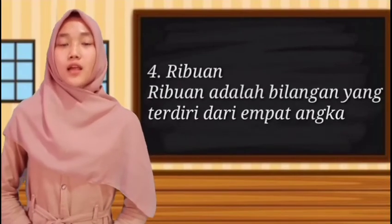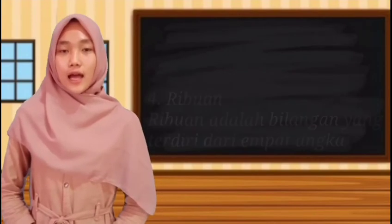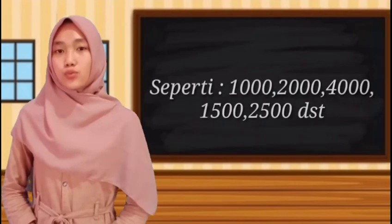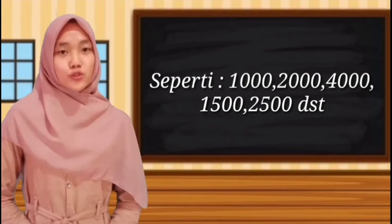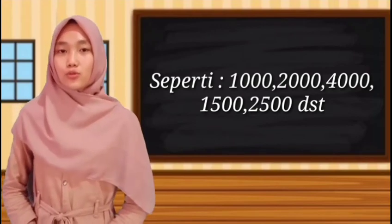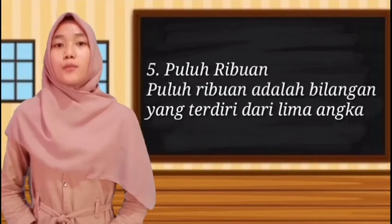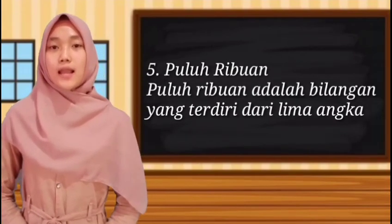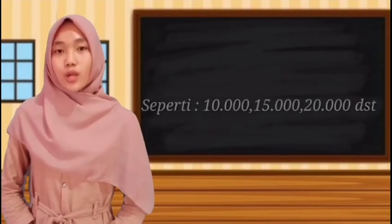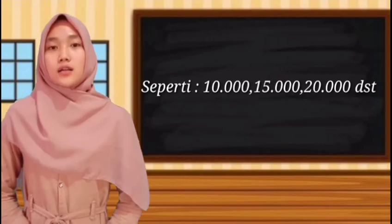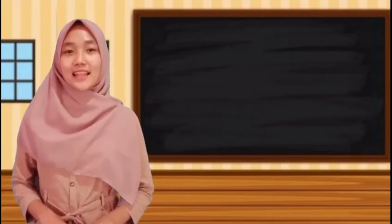Yang keempat ribuan. Ribuan adalah bilangan yang terdiri dari empat angka, seperti 1.000, 2.000, 4.000, 1.500, 2.500, dan seterusnya. Yang kelima yaitu puluhan ribuan. Puluhan ribuan adalah bilangan yang terdiri dari lima angka, seperti 10.000, 15.000, 20.000, dan seterusnya.